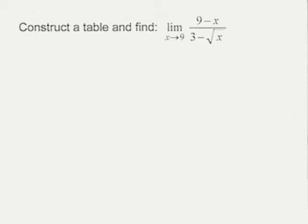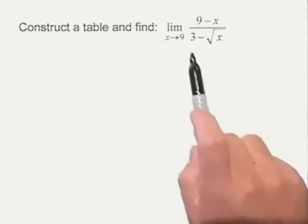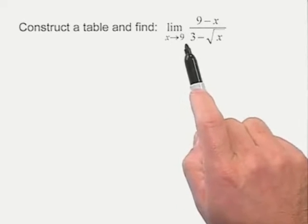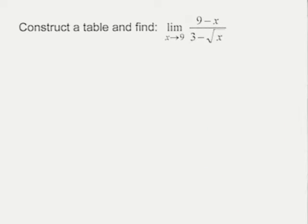Let's find the limit using tables. Here we want to construct a table and find the limit as X approaches nine of the following function: nine minus X divided by three minus the square root of X.